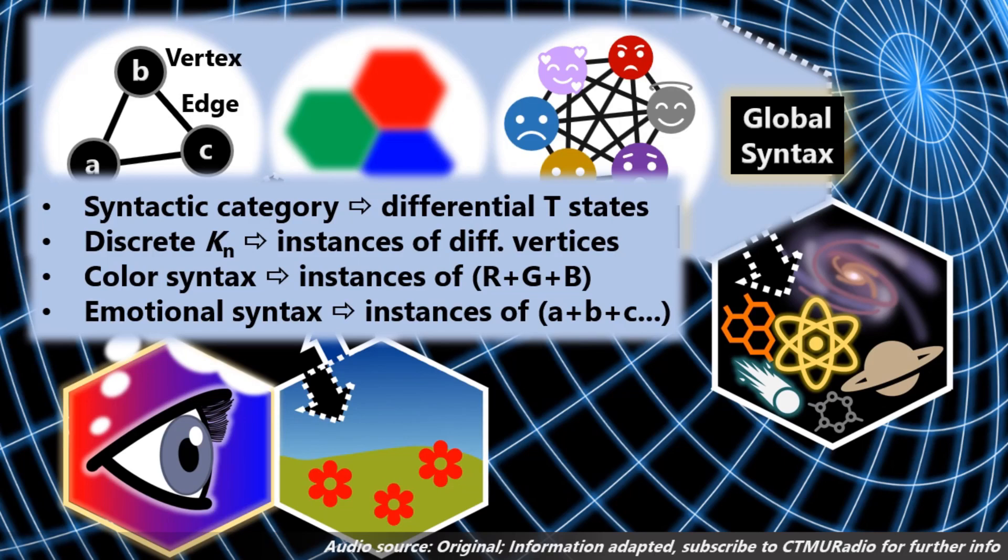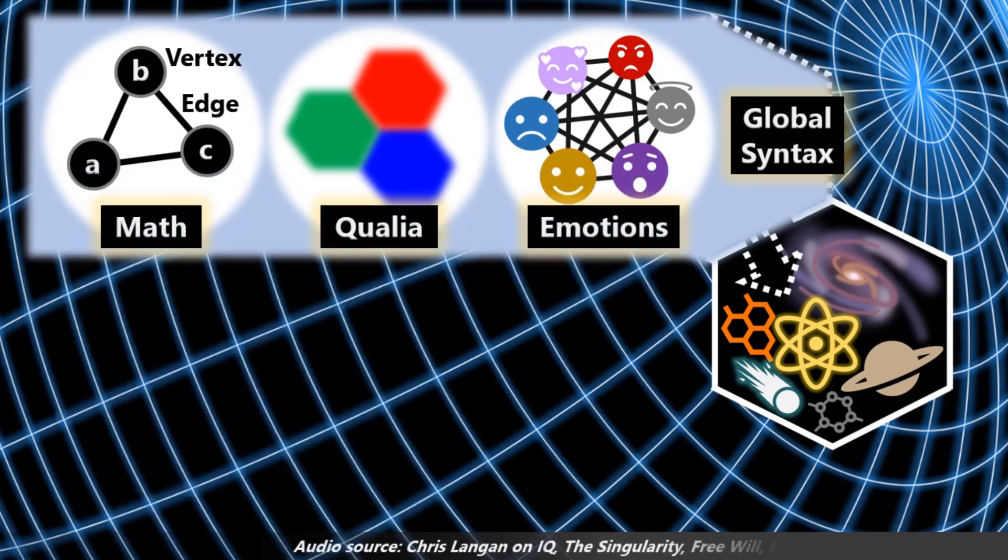Mathematics is part of the syntax of reality, which is the invariant structure of reality. Well, redness is definitely a property that exists only in syntax, in cognitive syntax. And so if you lack a cognitive syntax, you're not going to have redness. Here's the thing.